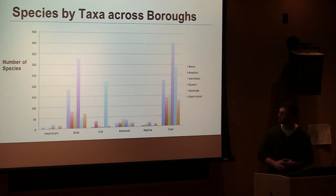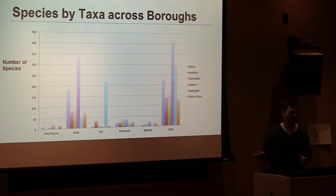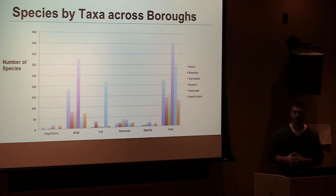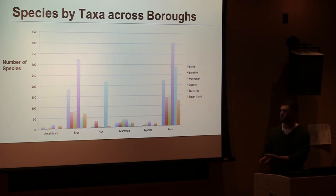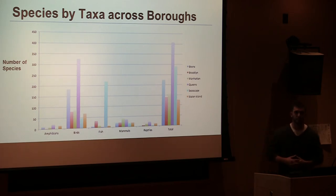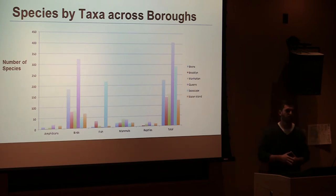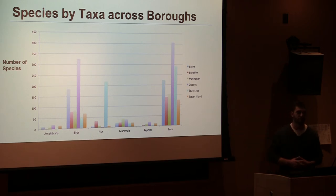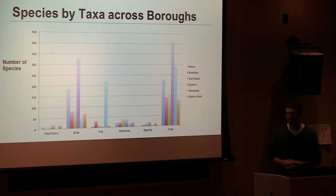The next graph shows species by taxa across boroughs and looks nearly identical to the previous one except for changes in the y-axis. This illustrates how the amount of observational effort reflects the species richness found across taxa and boroughs. For future data collection, we would like to focus more on mammals, reptiles, amphibians, and fish to better represent actual species diversity, as our data was slightly skewed by the large numbers of birds observed and the high event count in Queens.